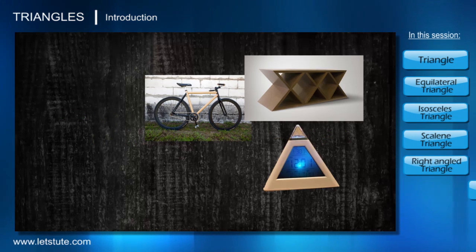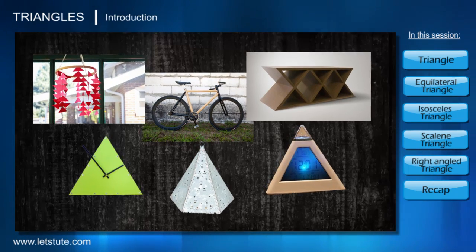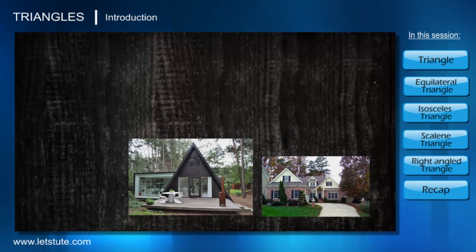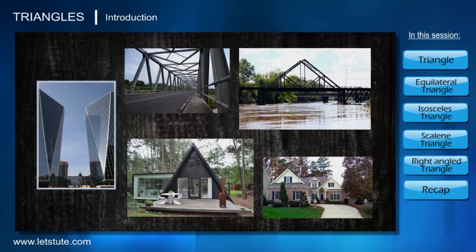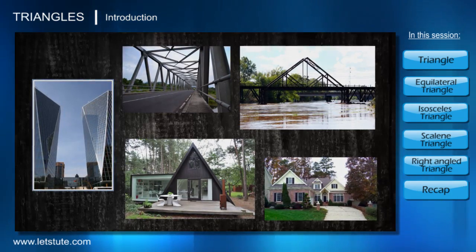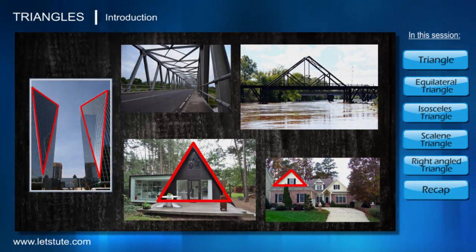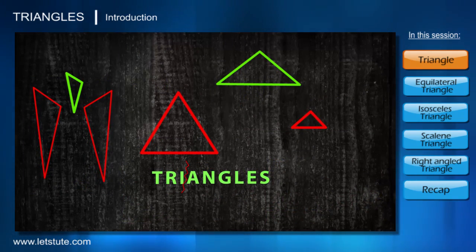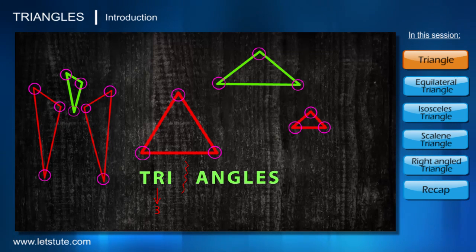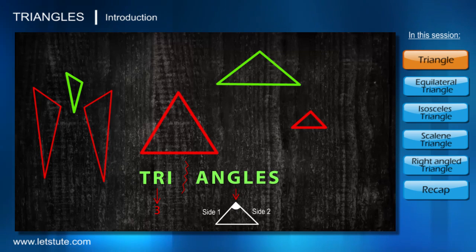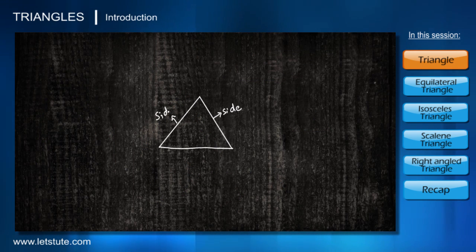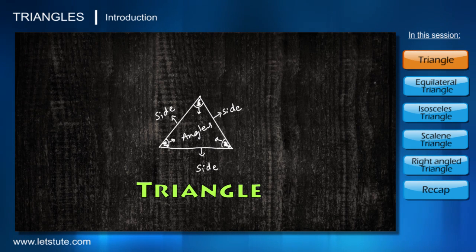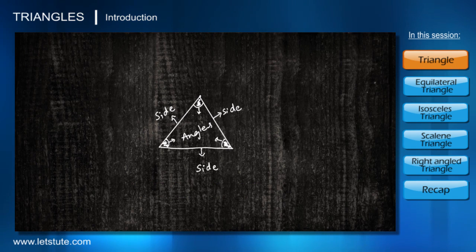If you notice in the surroundings, there is one shape which is majorly used by architects and engineers, and most commonly seen in different structures like rooftops and bridges. That shape is triangle. If we split the name: 'tri' means three and 'angles' means the corners made by two sides. So if a shape has three sides and they form three angles, then it is called a triangle.